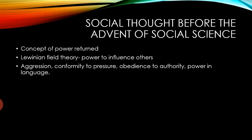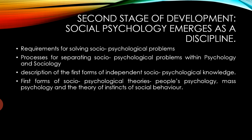Then came the second stage of development — how social psychology emerged as a discipline. The requirement concerning the solution of socio-psychological problems arose, and thus a separate discipline like social psychology came into existence. The first forms of socio-psychological theories came, based on people's psychology, mass psychology, and the theory of instincts of social behaviour.